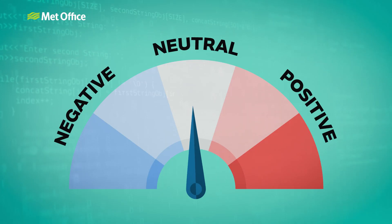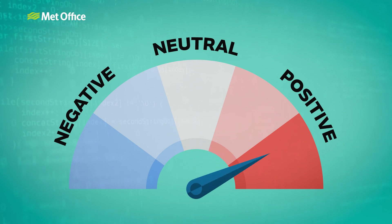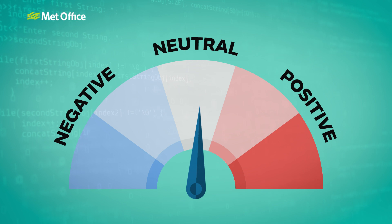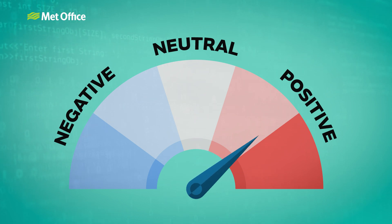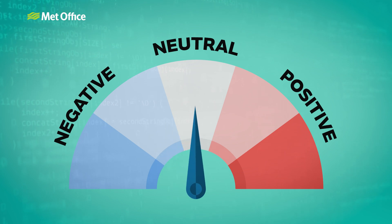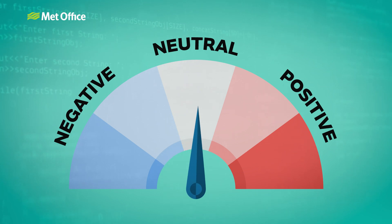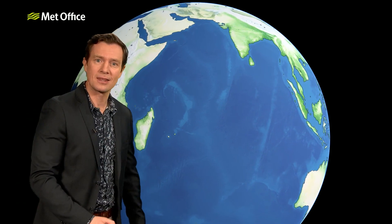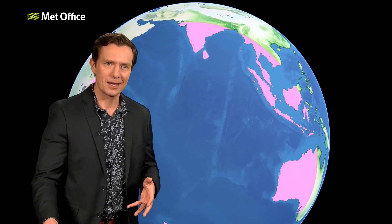The IOD changes year to year between three states: positive, negative, and neutral. Each state has different effects on weather patterns, and each year the intensity — just how positive or how negative the IOD is — also varies. Many years, the IOD will simply remain neutral throughout. Generally speaking, the closer a country is to the Indian Ocean, the stronger the link between the weather patterns and the IOD.